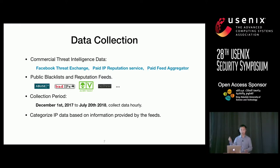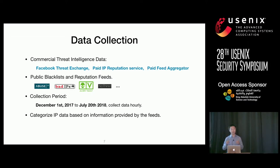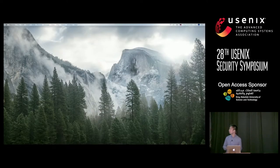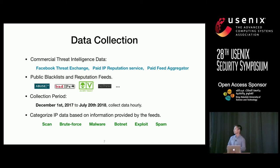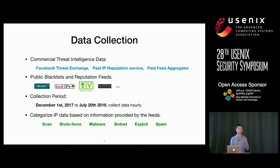We perform this categorization because different IPs have different meanings — without it we might end up comparing apples to oranges. We focus on the six most popular categories in our dataset: scanners; brute force — IPs that have conducted brute-force login attempts; malware — IPs serving as malware command-and-control servers; botnet — hosts belonging to a botnet; exploit — hosts that have conducted remote vulnerability exploits; and spam — IPs involved in sending spam emails.